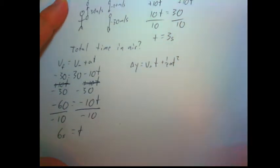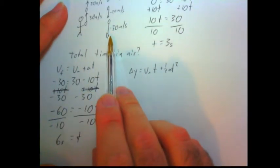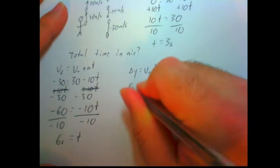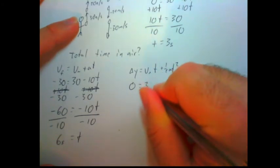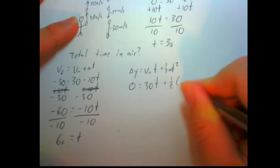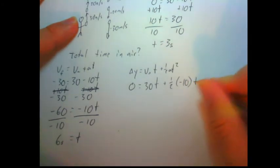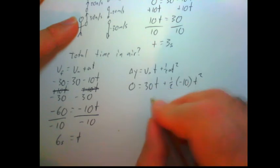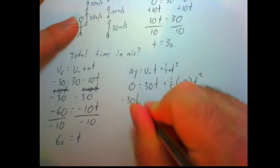We'll use our displacement formula. Notice the ball goes up and comes down to the same height, so our displacement is zero. The initial velocity is 30 times time plus one-half, negative 10 is our acceleration, times time squared. Let's subtract 30t from each side.